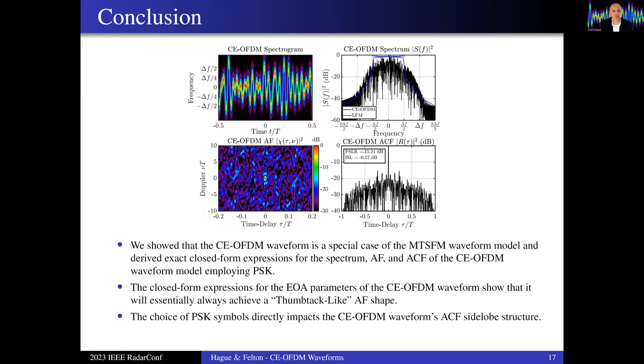Just to quickly conclude, we showed that the CE-OFDM waveform is a special case of the Multi-Tone S-FM waveform model. From there, we were able to derive exact closed form expressions for the spectrum, the ambiguity function, and also the auto-correlation function of a CE-OFDM waveform using PSK sequences. We also got closed form expressions for the EOA parameters of the CE-OFDM waveform and showed that it will essentially always achieve the thumbtack ambiguity function shape. That sort of formulates the side lobe structures that we would expect. But even though they'll generally be thumbtacks, the choice of the PSK symbols does indeed impact the ACF side lobe structure in terms of getting slightly lower peak side lobes. And that looks like a topic of future investigation, either through optimization routines or through efficient code construction. So with that, I'll conclude my talk. Thank you for your time and attention. I look forward to giving this talk in front of all of you in San Antonio.